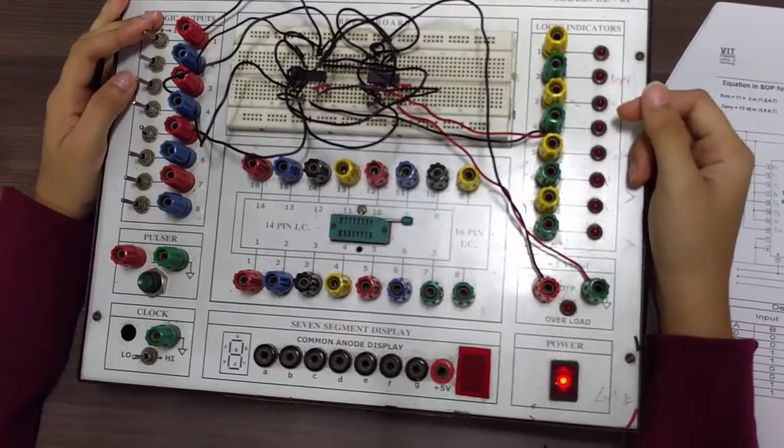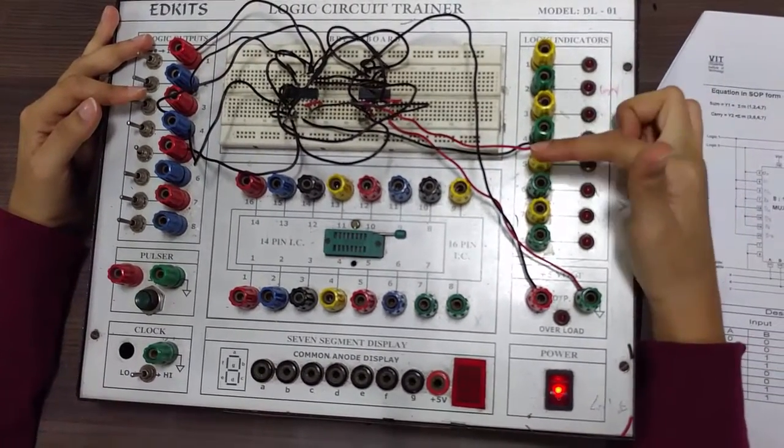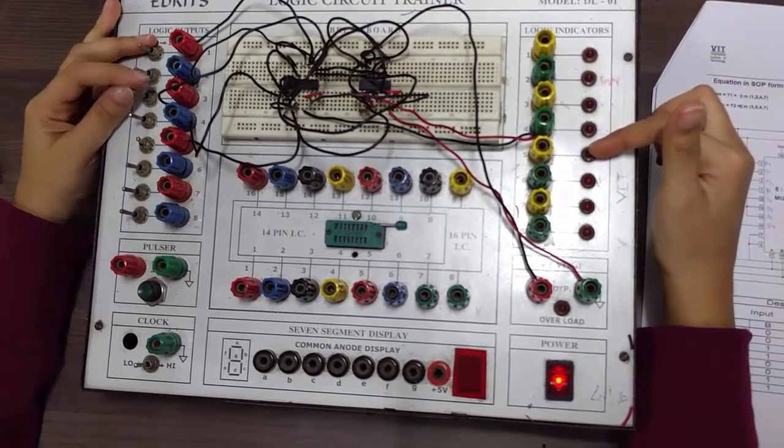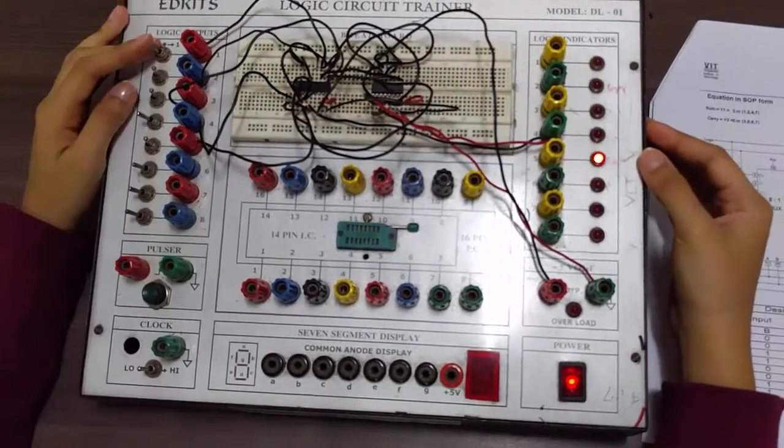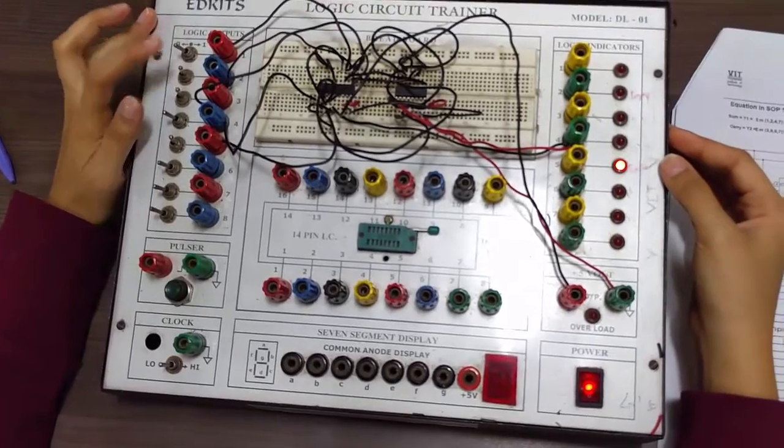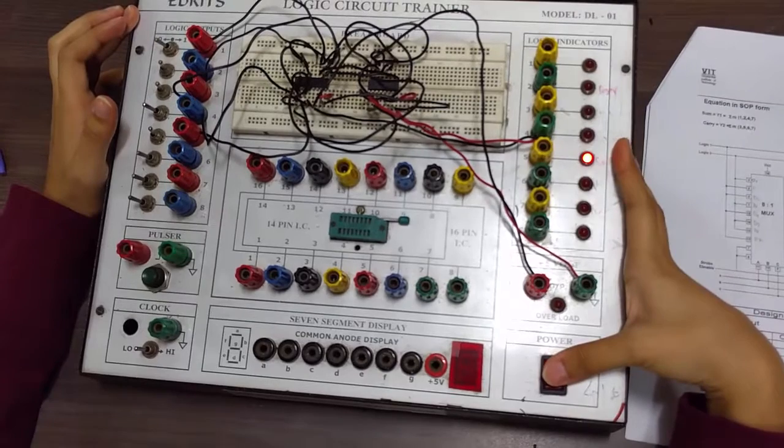Let's verify the truth table for the full adder circuit. For input 0 0 0, the sum is 0 and carry is 0. For 0 0 1, the sum is 1 and carry is 0. For 0 1 1, the sum is 0 and carry is 1. Hence, the truth table is verified. Thank you.